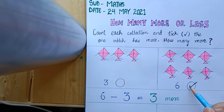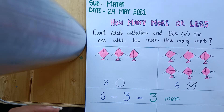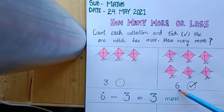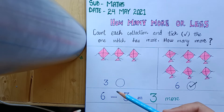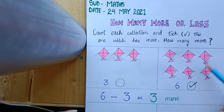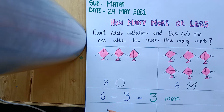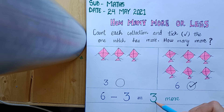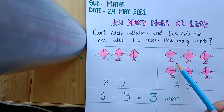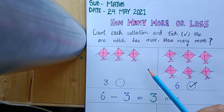So tick this collection. Now we know that in subtraction we take the smaller number minus from the bigger number. Right? That's how we will find out how many more things are in that collection. So six minus three equals three. In this collection there are three more kites.